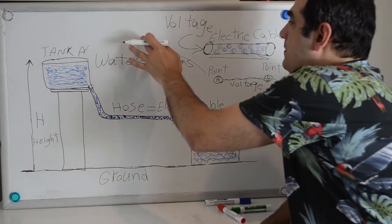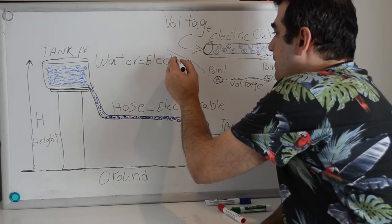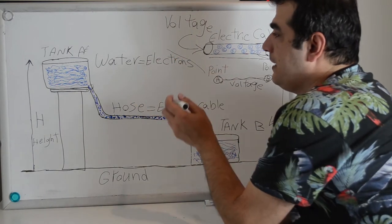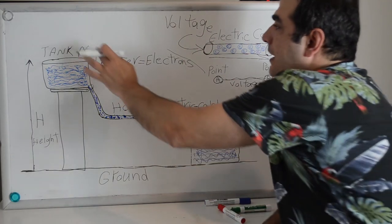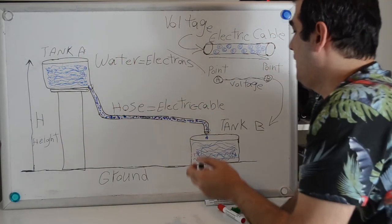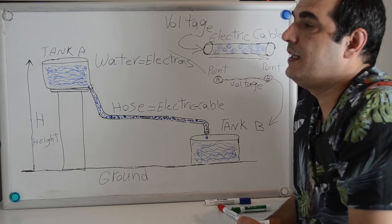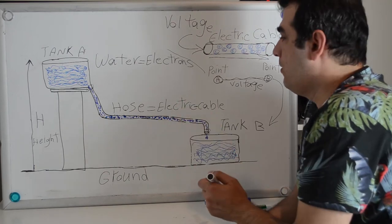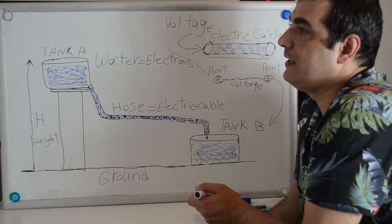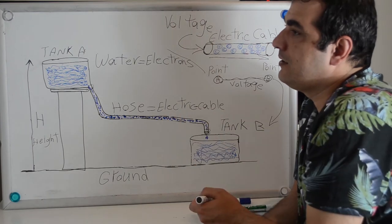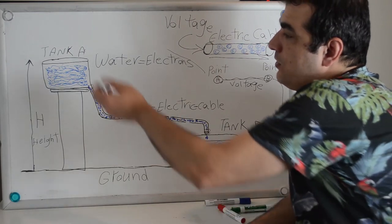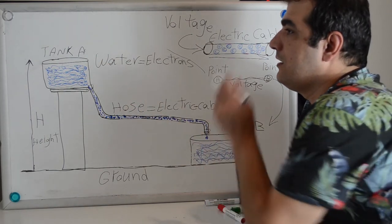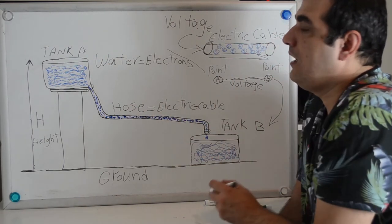Now if you have two tanks, the first tank is Tank A and the second one is Tank B, and these tanks are connected by a hose. When you look at the two tanks, the water level of these two tanks has a height difference.